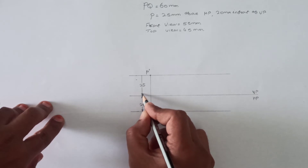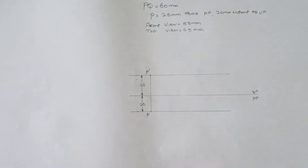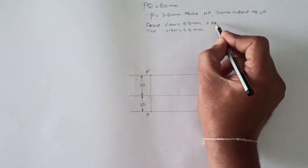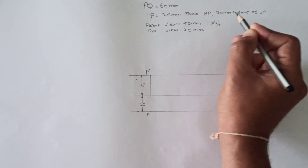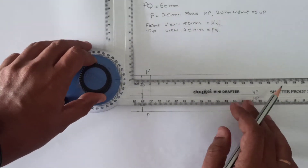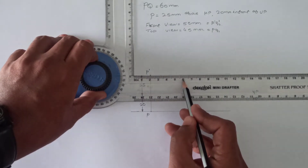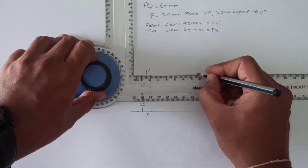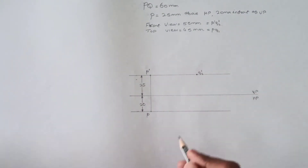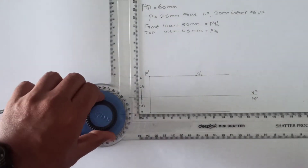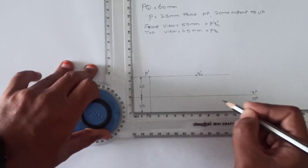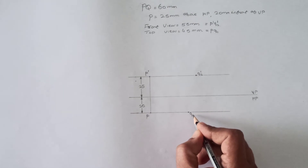After marking P' and P, mark the dimensions of the respective lines — 25 mm above HP and 20 mm in front of VP. The front view of the line is given as 55 mm, which is the distance between P' and Q2'. Similarly, the top view is given as 45 mm, which is the distance between P and Q1. From point P', mark Q2' at 55 mm on the horizontal line, and mark Q1 at 45 mm on the opposite horizontal line.